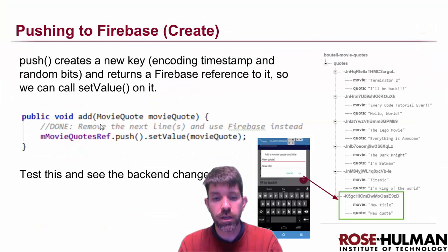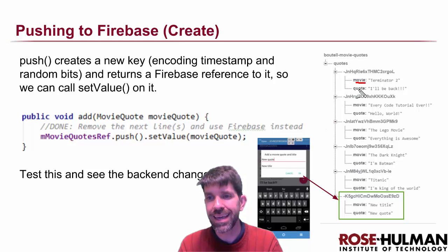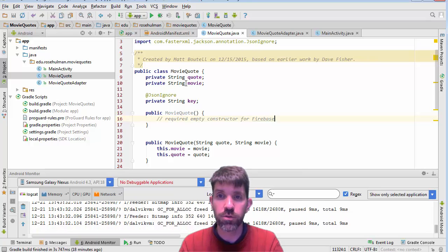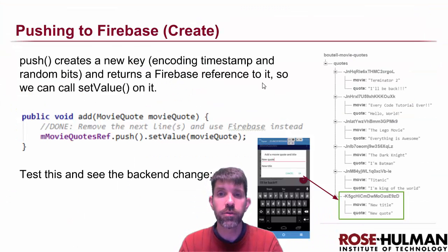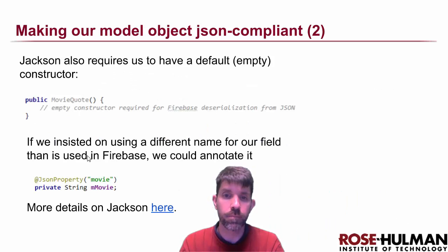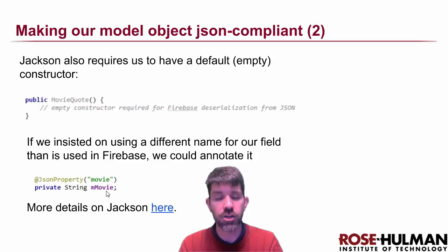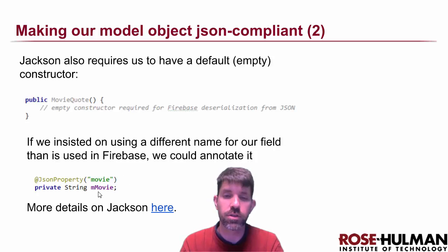One more thing: we're choosing to use the same field names on Firebase as in our back end — they're called 'movie' and 'quote' in both places. But if you really wanted different names, you can set that with the @JsonProperty annotation, where you tell it what it should be packaged as in JSON versus the actual field name in Java. So you could use different names if you wanted, like if you insisted on using 'm' prefixes in your model objects.